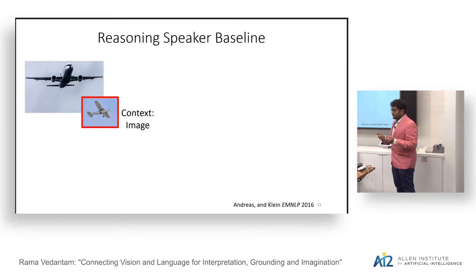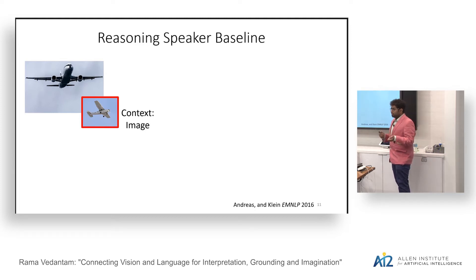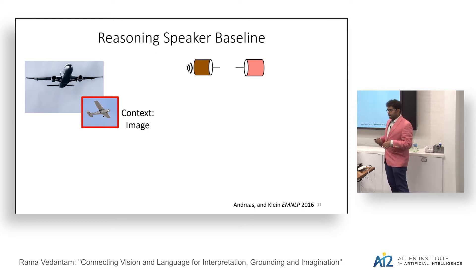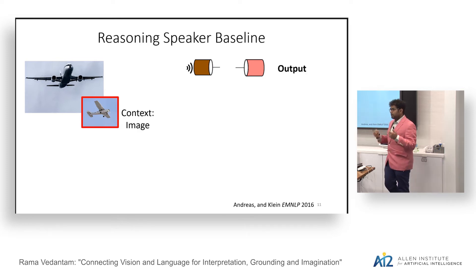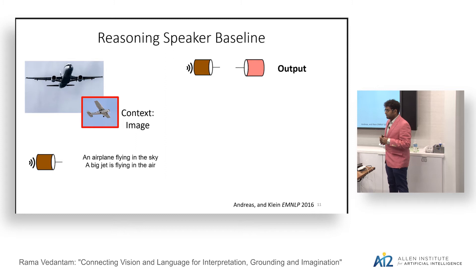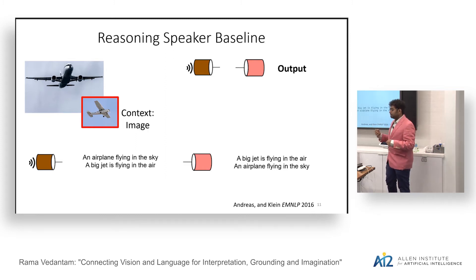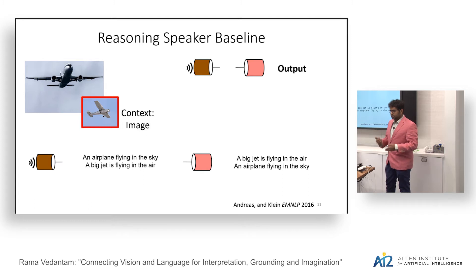The second task is justification, where our goal is to answer: why is this image a black-throated blue warbler and not a black-and-white warbler — where the black-throated blue warbler is the target class and the black-and-white warbler is the distractor. One baseline approach is to take this target-distractor image pair, run a speaker — basically a regular image captioning model — generate utterances from that, then take the sampled utterances and train a ranker to pick a discriminative sentence.